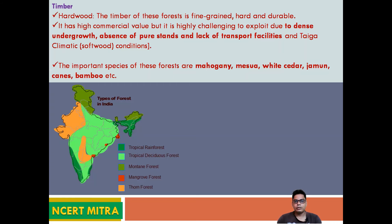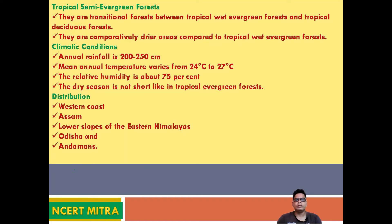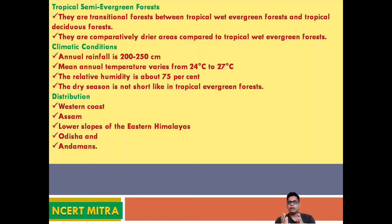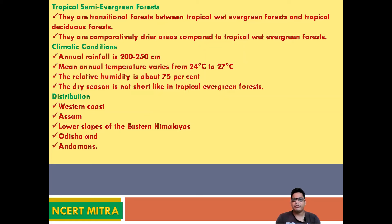These forests can also be divided into semi-evergreen forests, which are transitional forests between tropical evergreen and tropical deciduous forests. The climatic conditions for semi-evergreen forests include annual rainfall of 200 to 250 cm, mean annual temperature of 24 to 27 degrees centigrade, and relative humidity of around 75 percent. The dry season is not as short as in tropical evergreen forests.